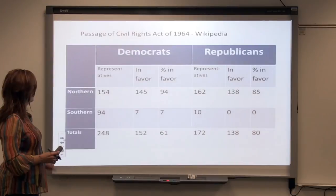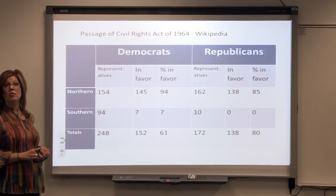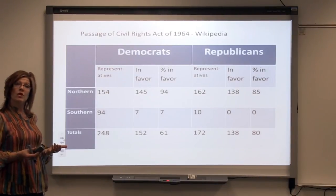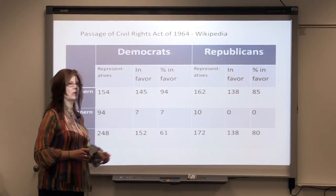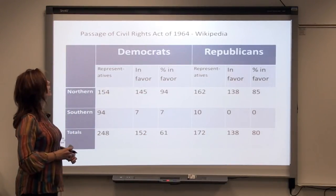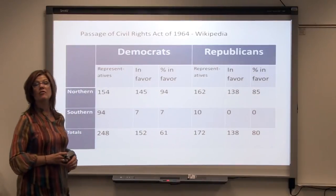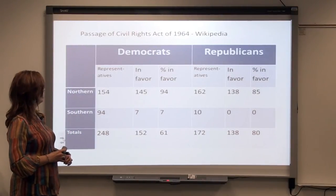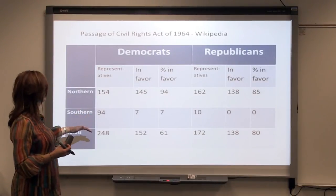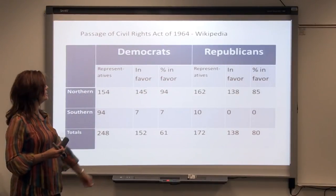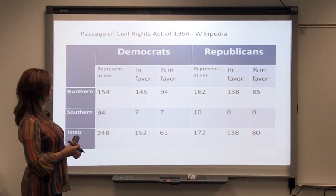Let's take another example from history. This data is about the passage of the Civil Rights Act — how many Democrats voted in favor of it, and how many Republicans voted in favor of it. If we look at the total numbers, it looks like Democrats voted in favor of the Civil Rights Act, but 80% of Republicans voted in favor as well. However, if we break those down and look at the northern and southern states, in both cases Democrats voted more, percentage-wise, in favor of the Civil Rights Act.